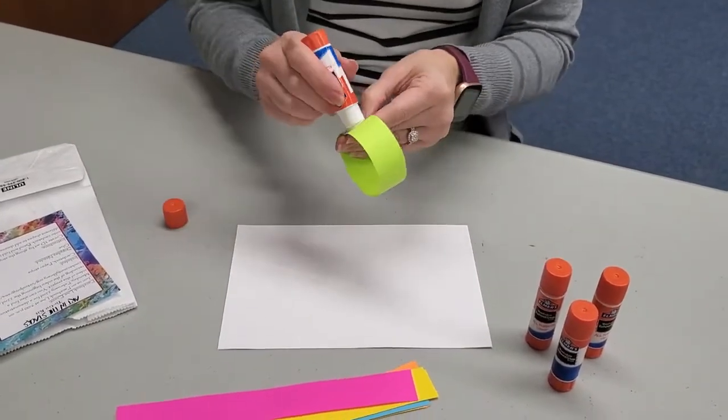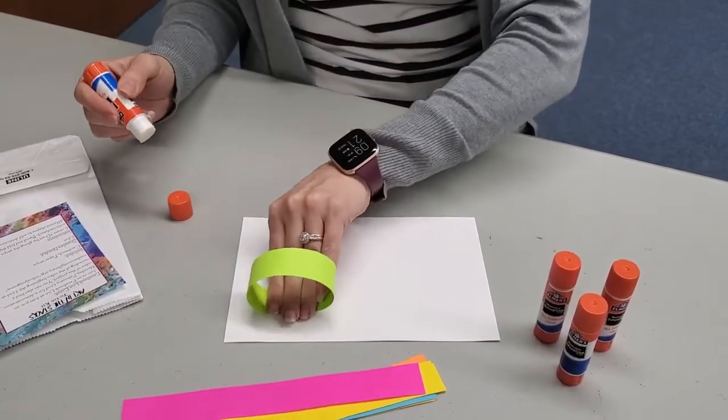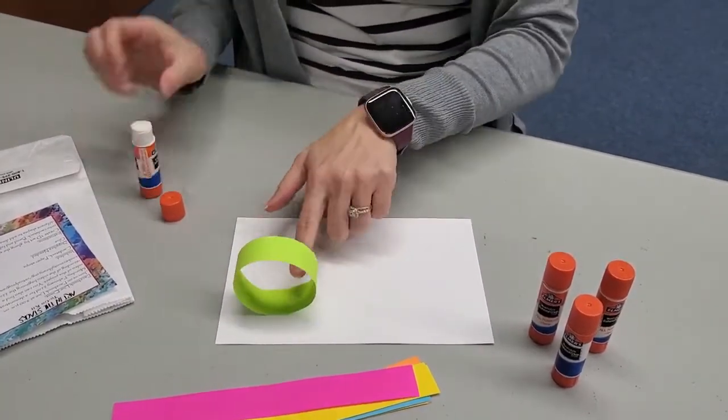One example would be to make a loop. And you're just gluing it onto your cardstock.